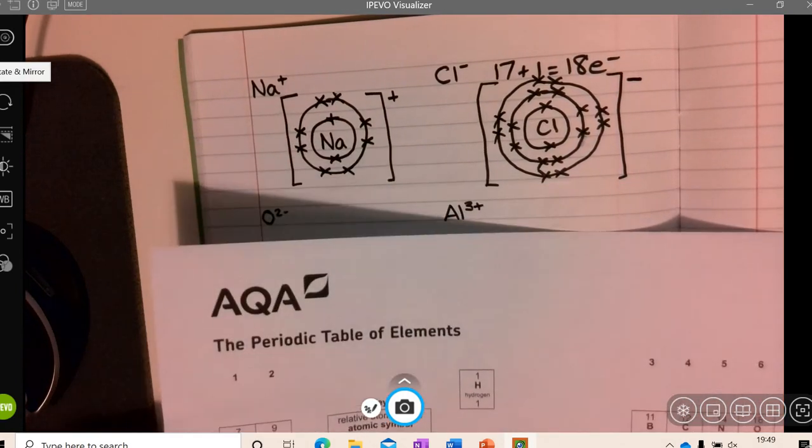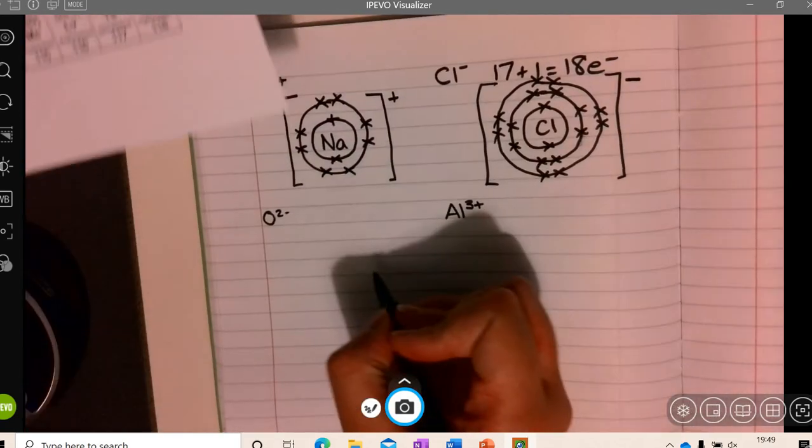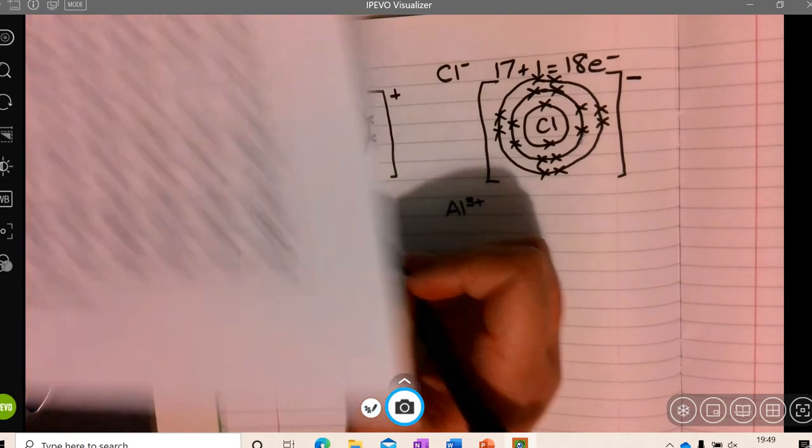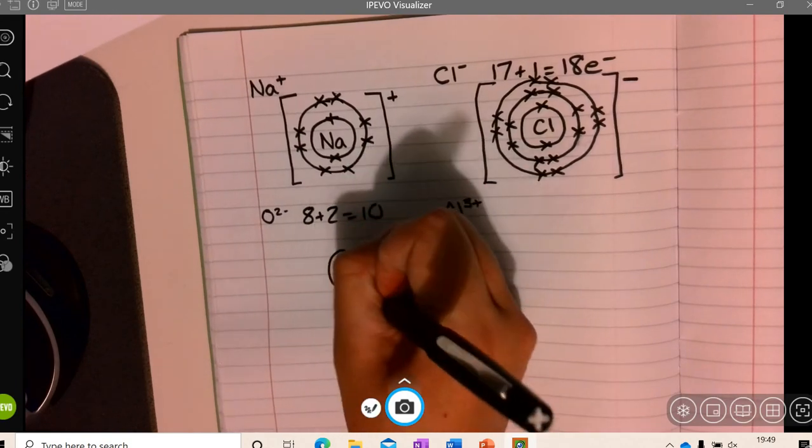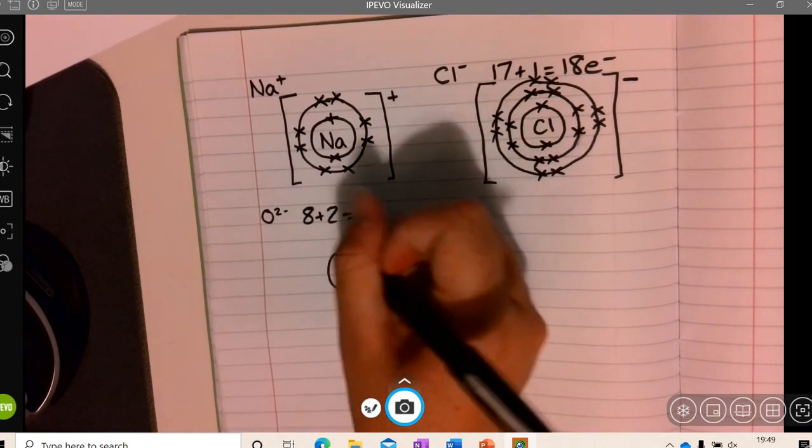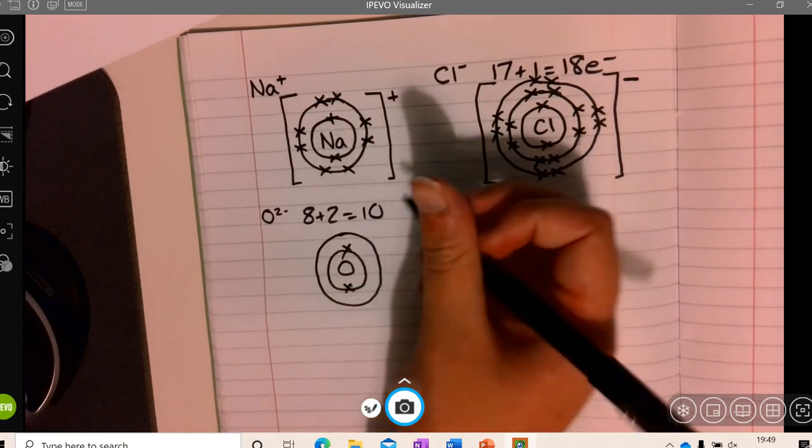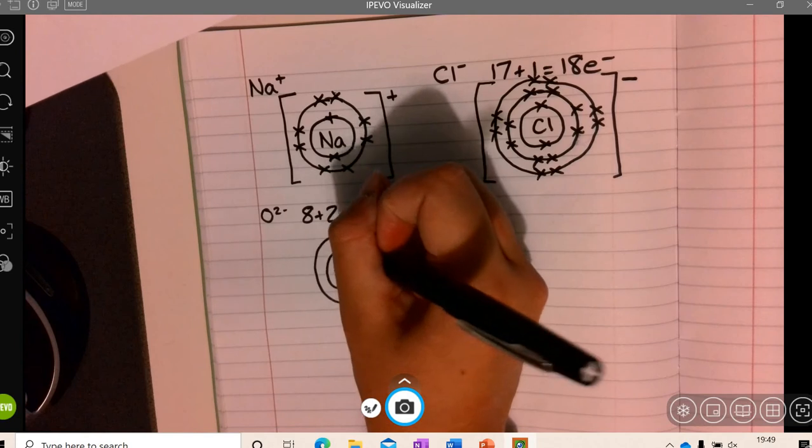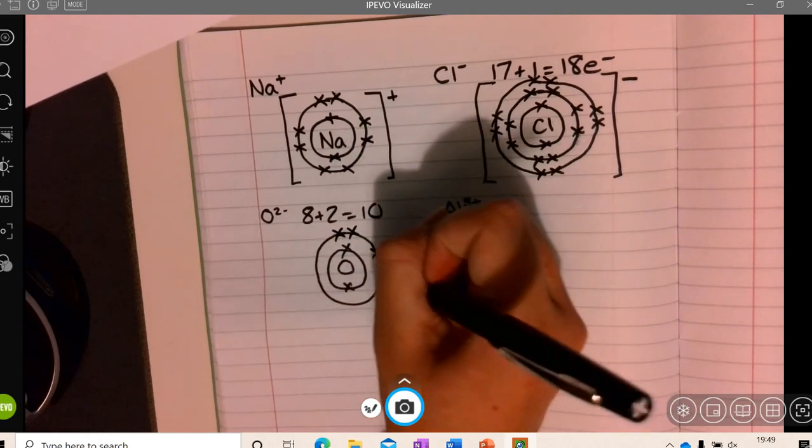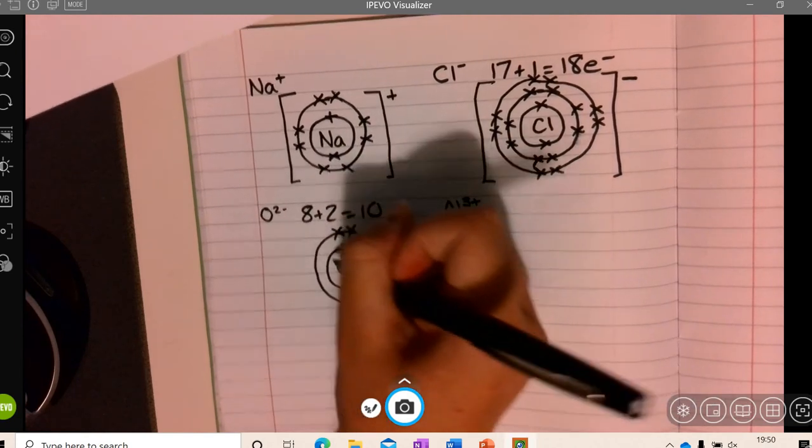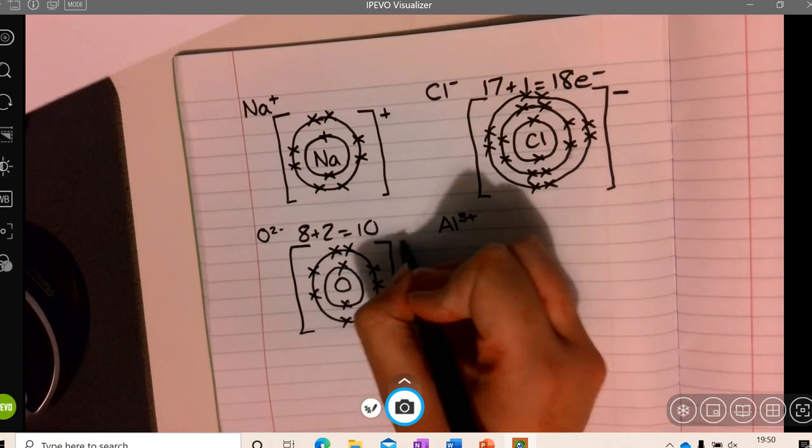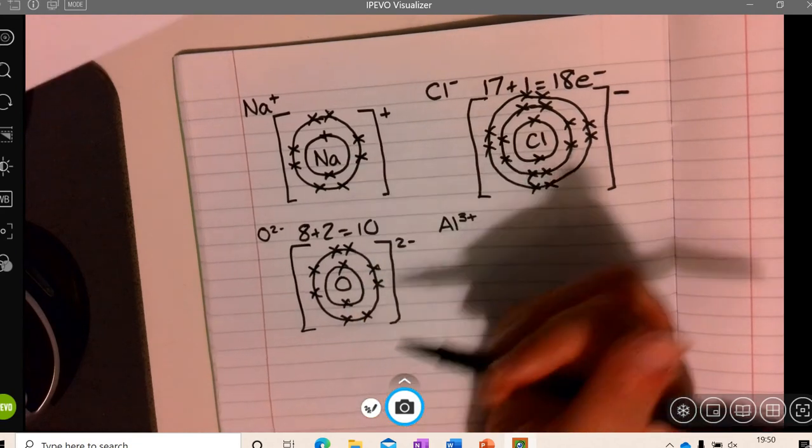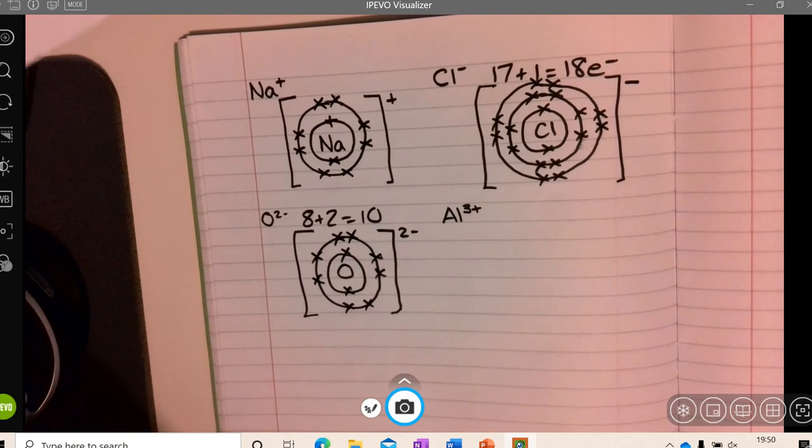I'm going to quickly do the last two, just so you can check your answers. So we have oxygen with an extra 2 electrons. Oxygen started with 8, so 8 plus 2 is 10. You can see the sodium plus ion and the oxygen 2 minus ion have the same number of electrons.